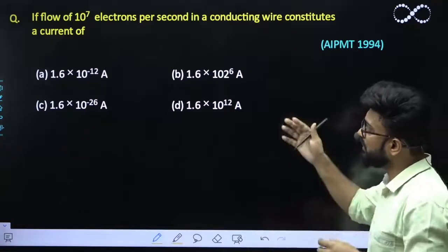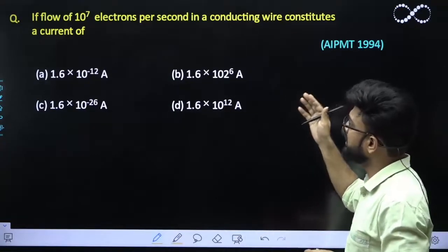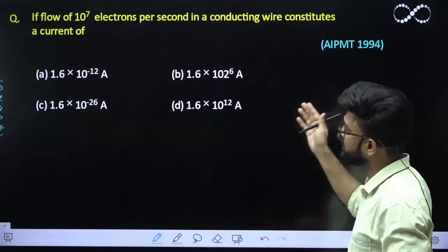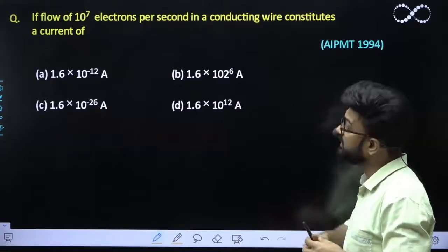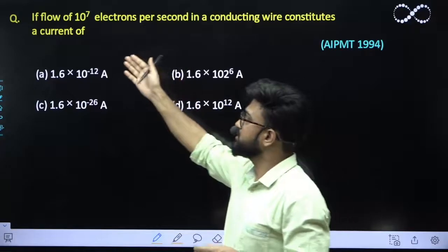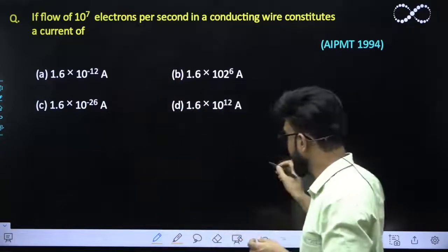If a flow of 10 raise to power 7 electrons per second in a conducting wire constitutes a current of... So what would be if in one second, 10 raise to power 7 electrons is flowing through a wire?